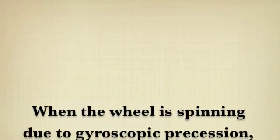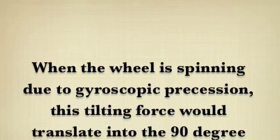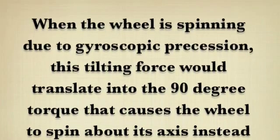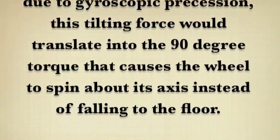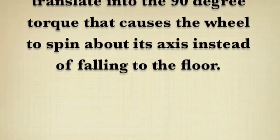When the wheel is spinning, due to gyroscopic precession, this tilting force will translate into the 90 degree torque that causes the wheel to spin about its axis instead of falling to the floor.